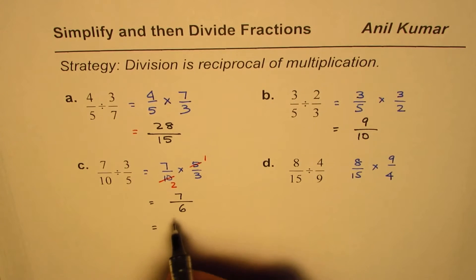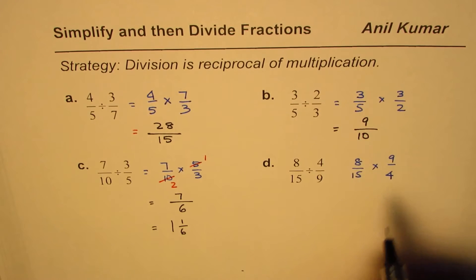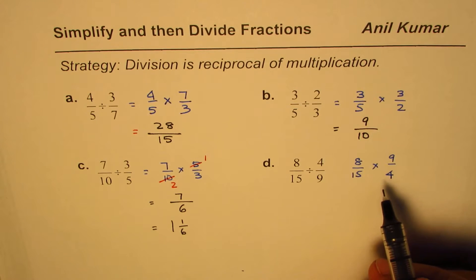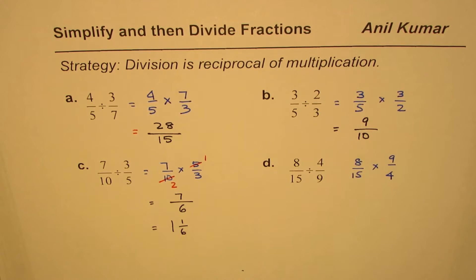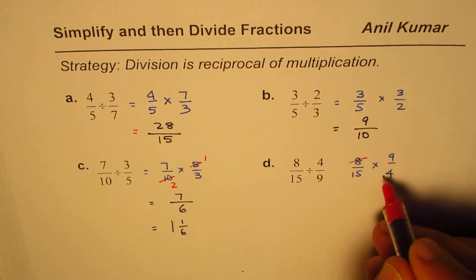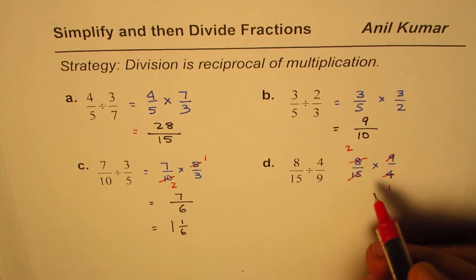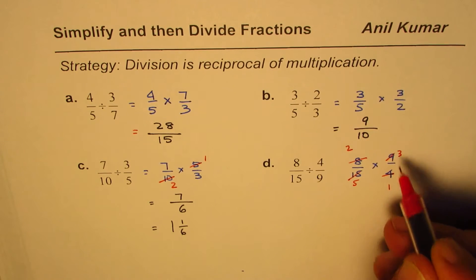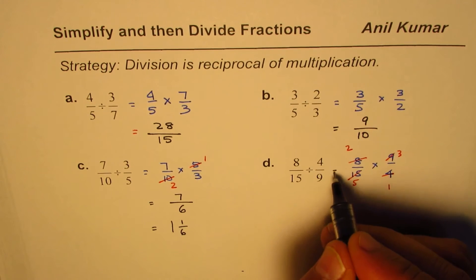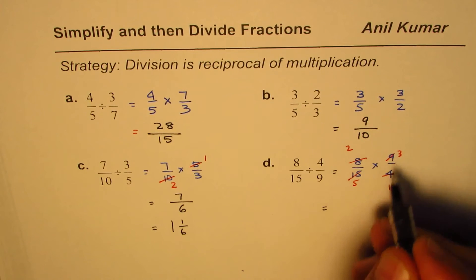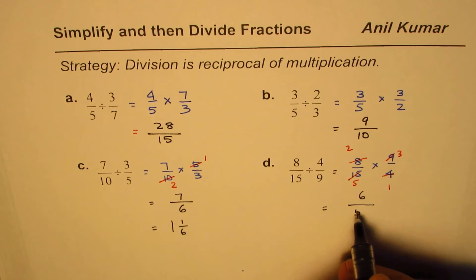For the fourth problem, we can simplify: 8 and 4 divide by 4 to get 2 and 1; 15 and 9 divide by 3 to get 5 and 3. Therefore: 2 × 3 is 6 over 5 × 1 is 5, giving us 6/5, which simplifies to 1 1/5.